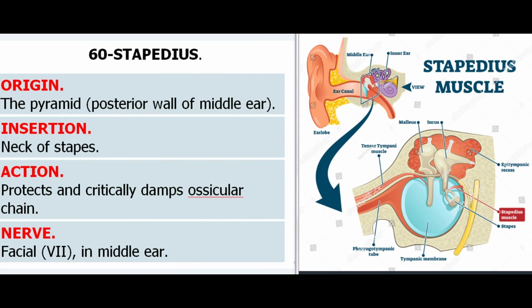60. Stapedius. Origin: The pyramid, posterior wall of middle ear. Insertion: Neck of stapes. Action: Protects and critically damps ossicular chain. Nerve: Facial nerve (VII) in middle ear.